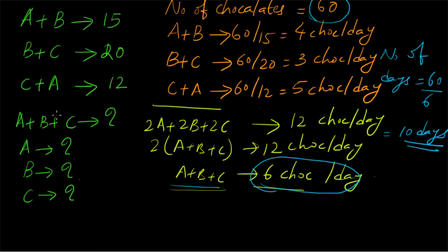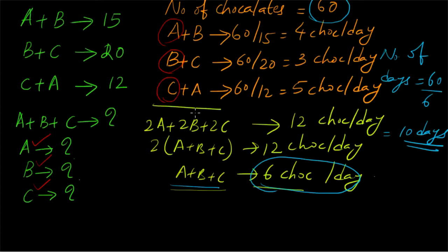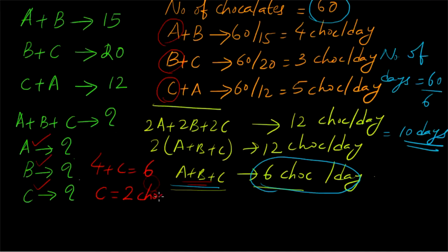Now for the second part: how many days will it take if A, B and C each work separately? We need to find how many chocolates each person consumes per day. Substituting A + B = 4 into the equation A + B + C = 6, we get 4 + C = 6, so C equals 2 chocolates per day.